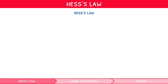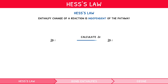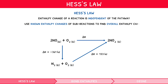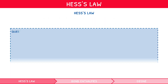Hess's Law states that the enthalpy change accompanying a chemical reaction is independent of the pathway between the initial and final states. Practically, if we want to calculate the enthalpy change for a reaction but don't have access to enthalpy values for the constituents, we can use known enthalpy changes of sub-reactions to find the overall enthalpy change. Let's talk through an example.